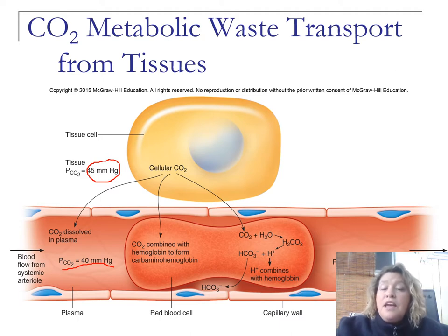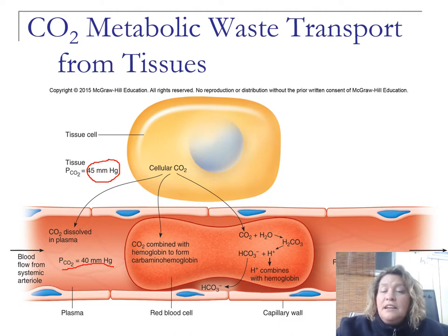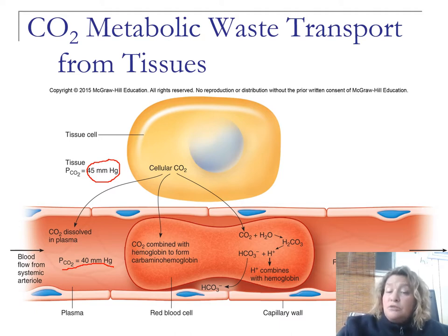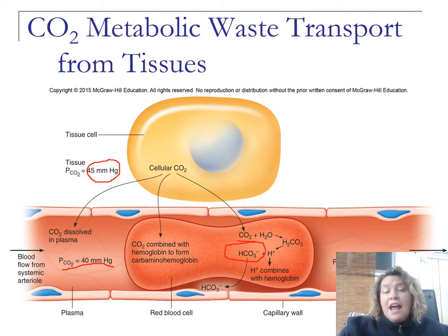The most common way is that CO2 enters the red blood cell and combines with water, forming carbonic acid (H2CO3). That then dissociates into a hydrogen ion — which often combines with hemoglobin — and bicarbonate. The bicarbonate and CO2 can diffuse into the blood, and CO2 is carried in that manner back to the lungs.